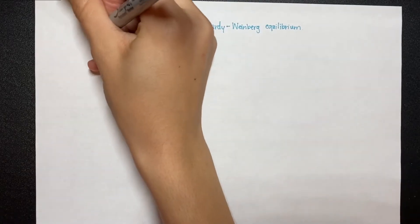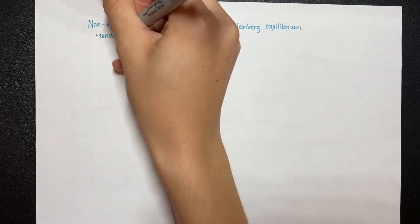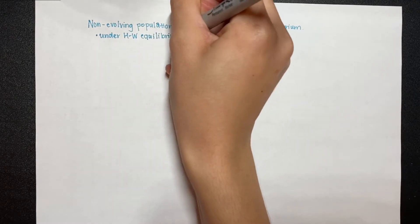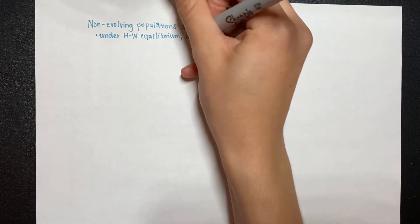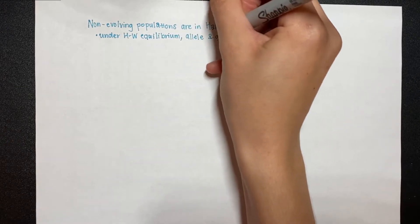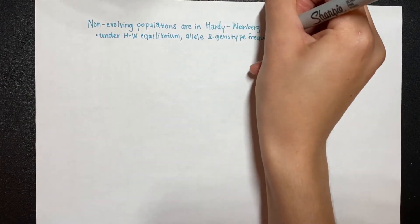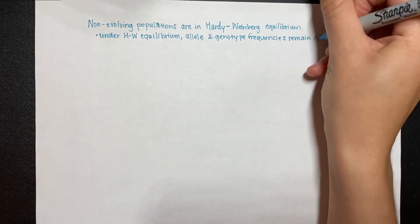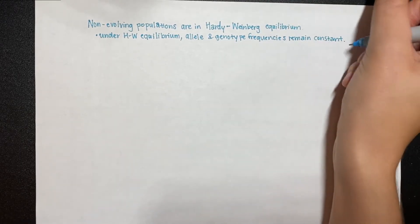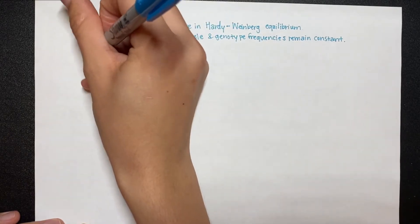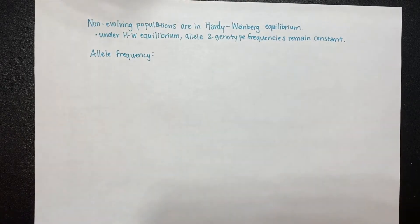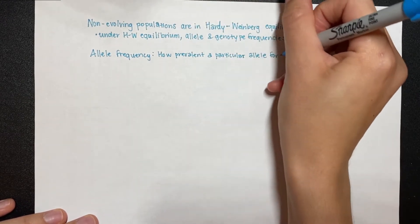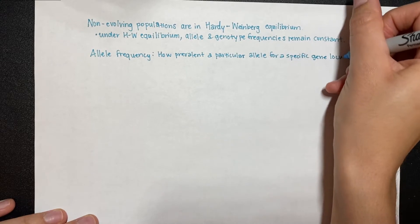This video breaks down the Hardy-Weinberg equilibrium equations, an idea coined by a British mathematician and German physician. Populations that are not evolving are said to be in Hardy-Weinberg equilibrium, which is often abbreviated as HW. Under Hardy-Weinberg equilibrium, the allele frequencies and genotype frequencies within a population remain constant from generation to generation. Allele frequency refers to how prevalent a particular allele for a specific gene locus is within a population.